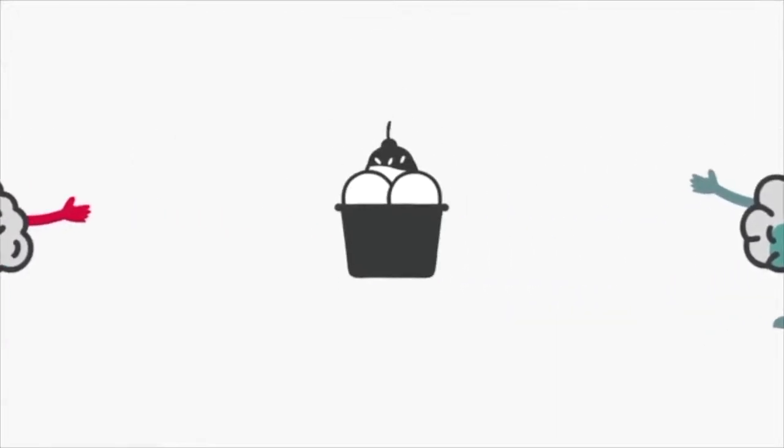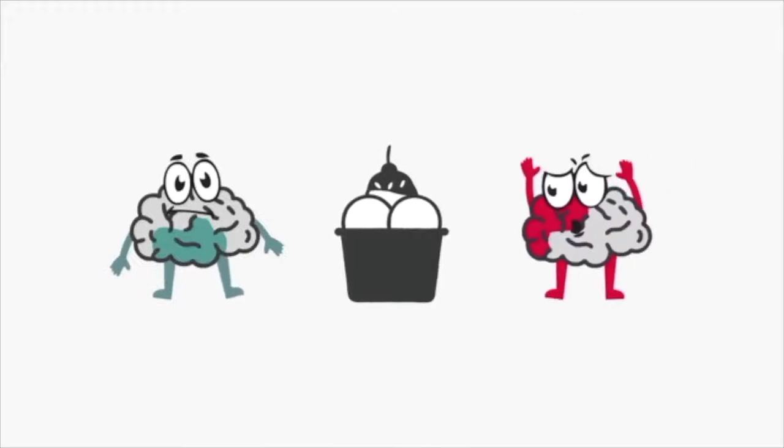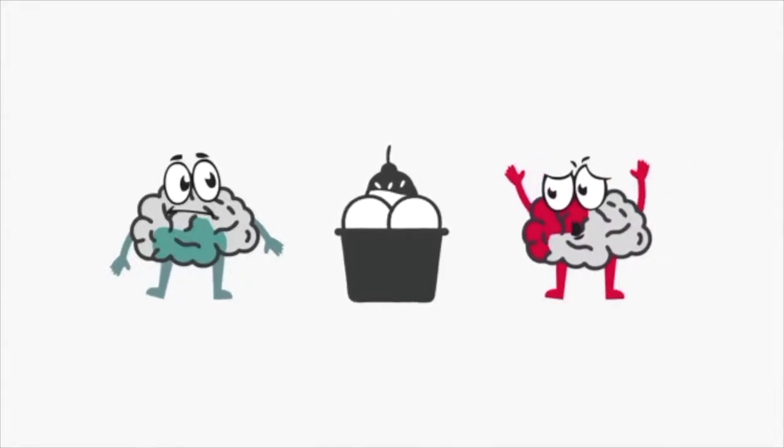Let's say the deep brain wants to eat a whole carton of ice cream. Why not? You'd enjoy it. But the front brain thinks about what might happen afterwards. You may feel sick. It's bad for your teeth.